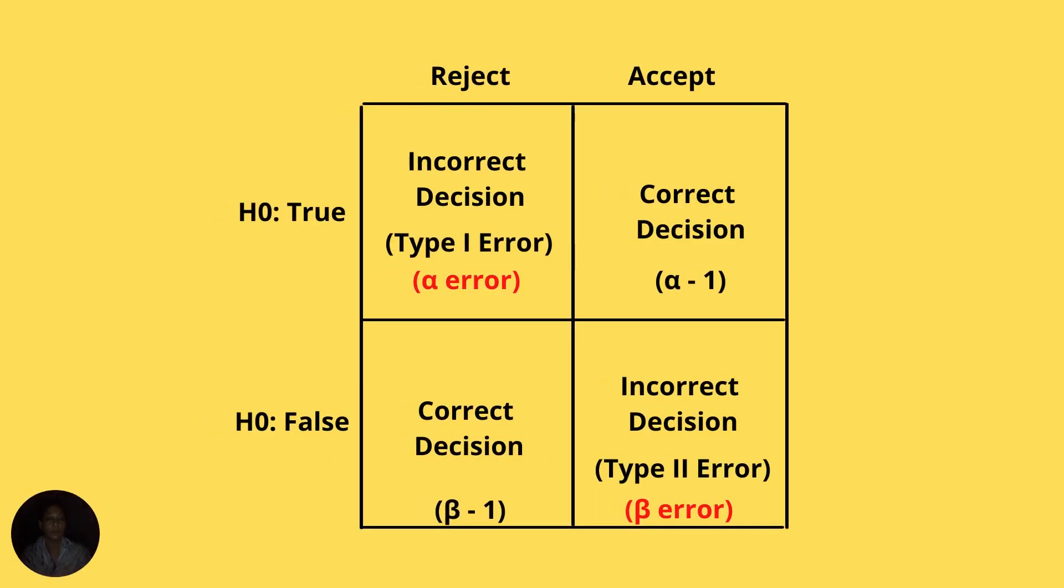If I have a null hypothesis that is true, and my statistical test results reject that true null hypothesis, that means I am making a mistake by rejecting a true null hypothesis. This is known as type I error or alpha error.